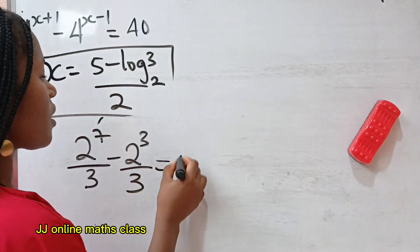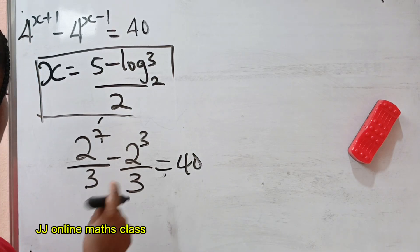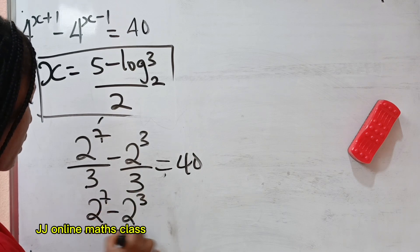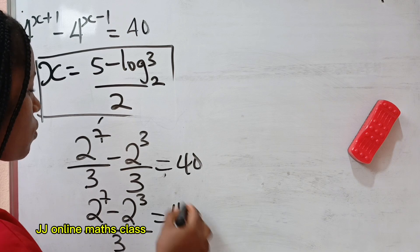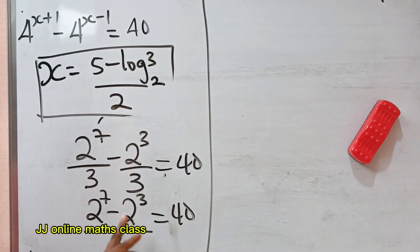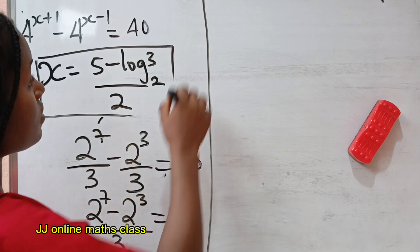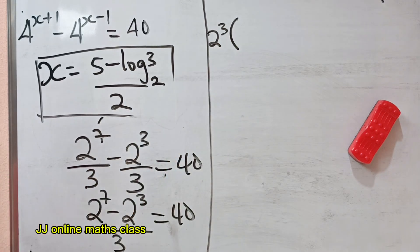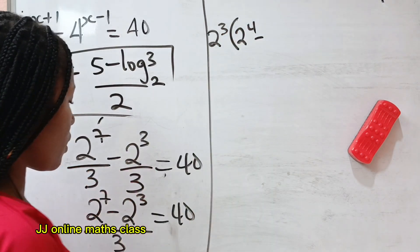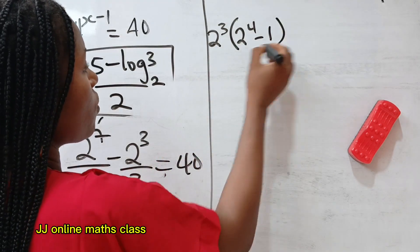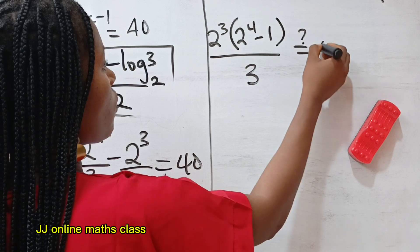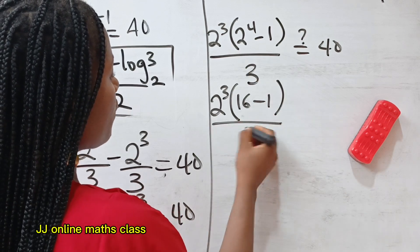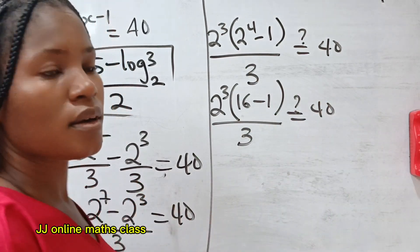They share the same denominator, so we can write (2^7 minus 2^3) divided by 3 is equal to 40. Now 2^7 and 2^3 share 2^3 as a common factor. Factoring out: 2^3 times (2^4 minus 1) divided by 3. So we have 2^3 brackets: 16 minus 1 divided by 3. That is 2^3 times 15 divided by 3. Now 3 divides 15 to give 5, so we have 2^3 multiplied by 5.